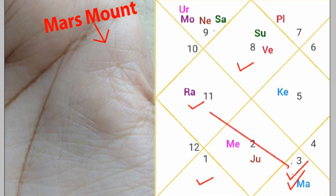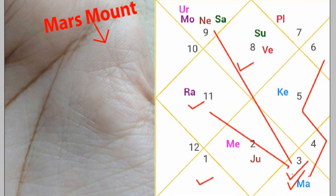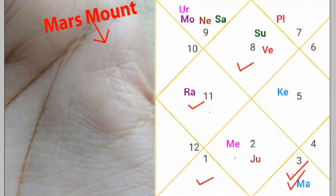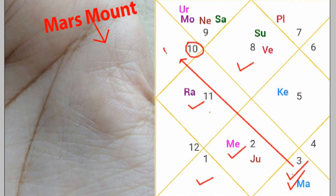Rahu is also giving an exalted drishti to the eighth house. Saturn is also watching the eighth house, fourth house, and eleventh house. This is why the person is earning in the sector of mysterious things. Mars' second drishti is on the second house, which is the house of family and reserve money — here Mars is giving uncertain loss as well as family separation. Mercury is also giving loss in the business house.